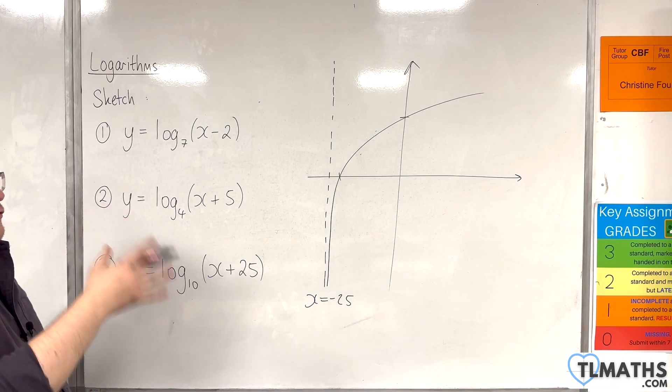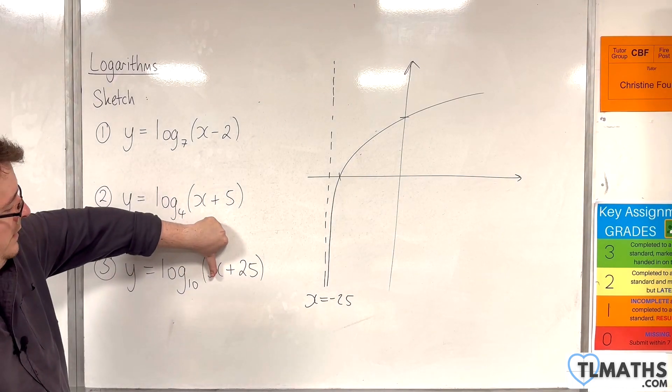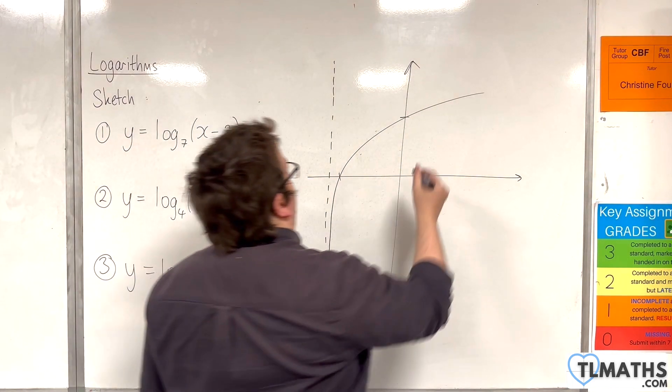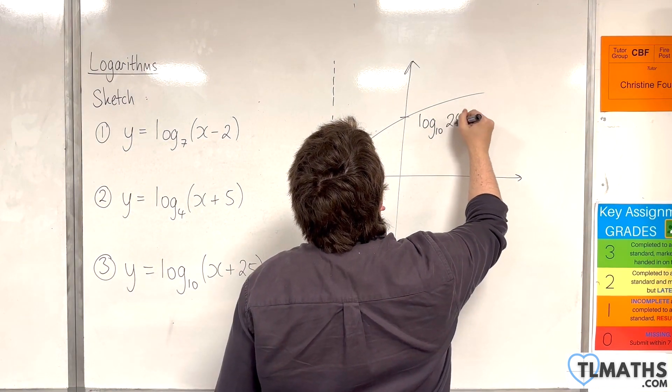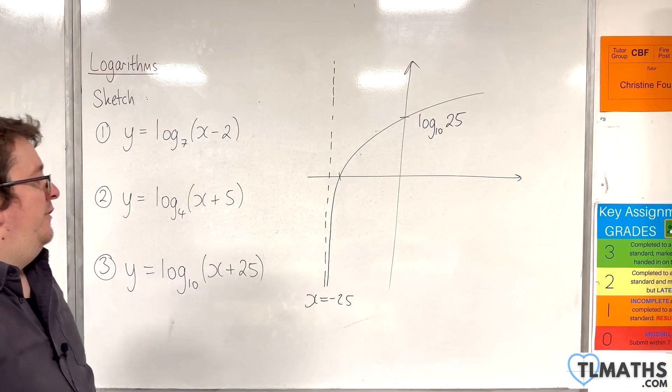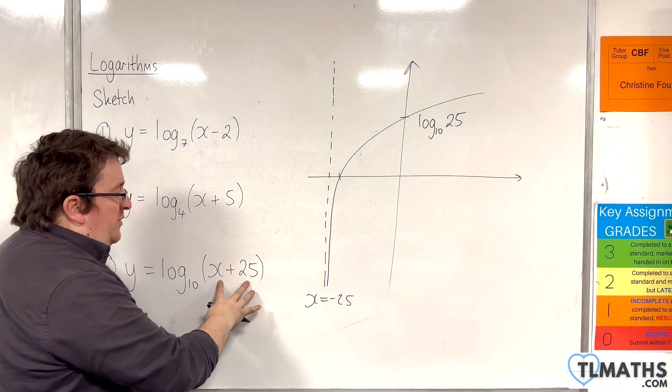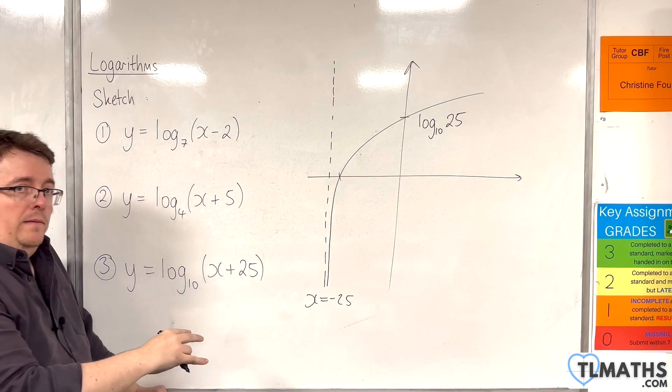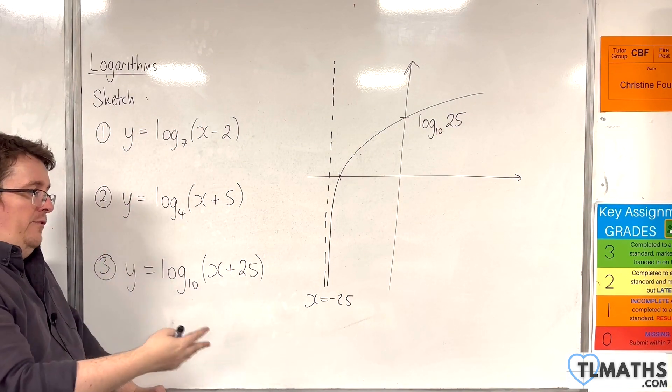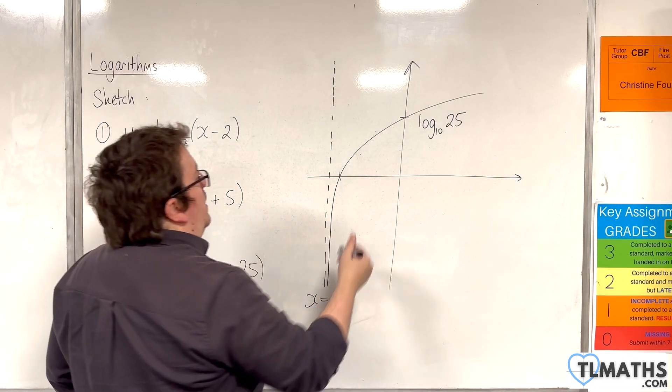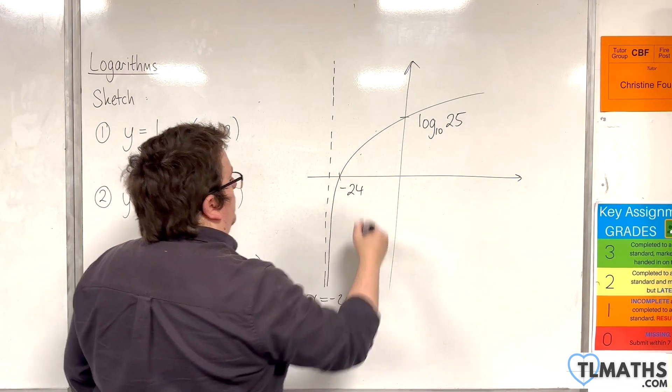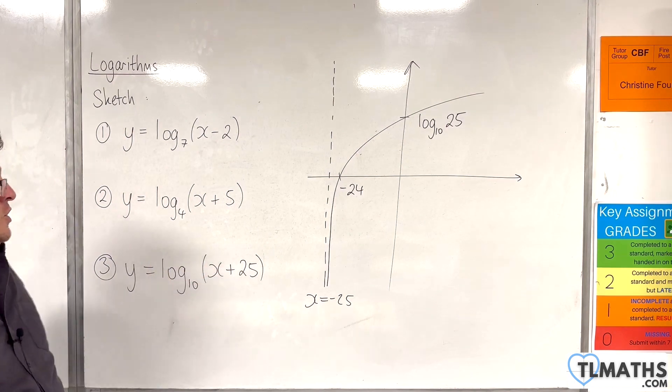Now, it crosses the y-axis when x is 0. So log base 10 of 25. And it crosses the x-axis where y is 0. That's when x plus 25 is equal to 1. So take 25 from both sides, so x would have to be minus 24. And so that is the sketch for number 3.